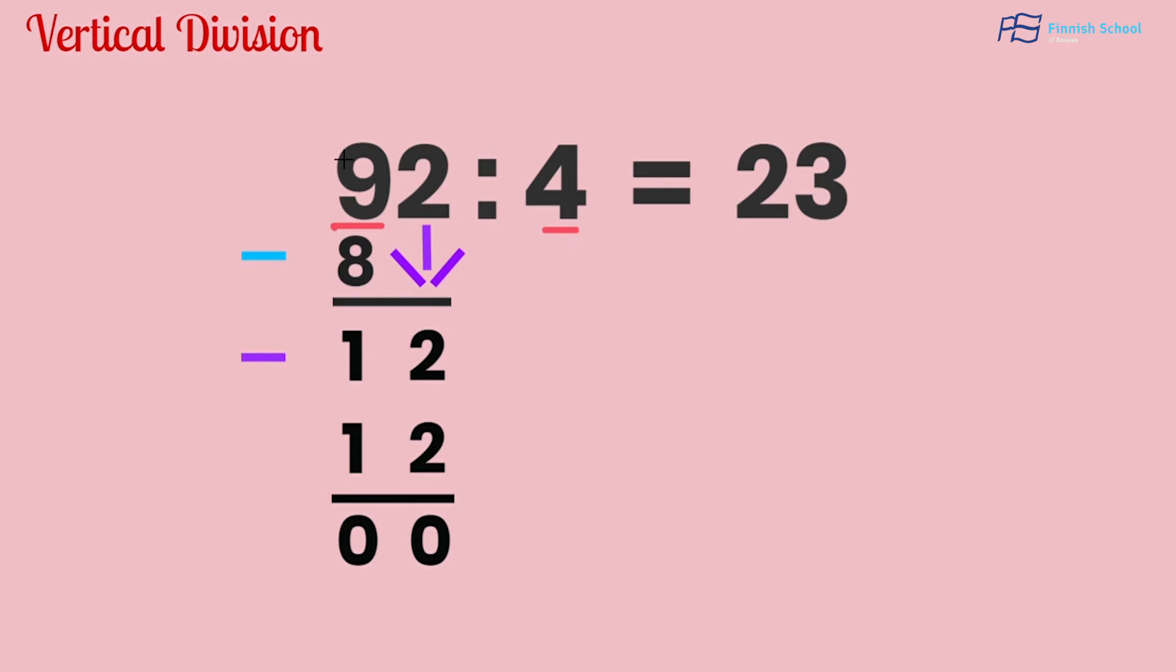First step: we have to look at the first number. In this case, the first number is 9. 9 divided by 4—we know that 9 can't be divided evenly by 4, but we have to find a number that when we multiply it with 4 can give us nearly 9.